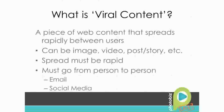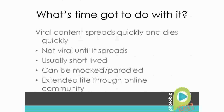The two main avenues this happens are through emails and through social media. It's got to be fast, and it's got to be person to person. It's called viral content because it behaves like an actual virus — it spreads quickly and dies just as quickly. You'll see something for a week or two, and then suddenly it's nowhere to be found. That was probably viral content.